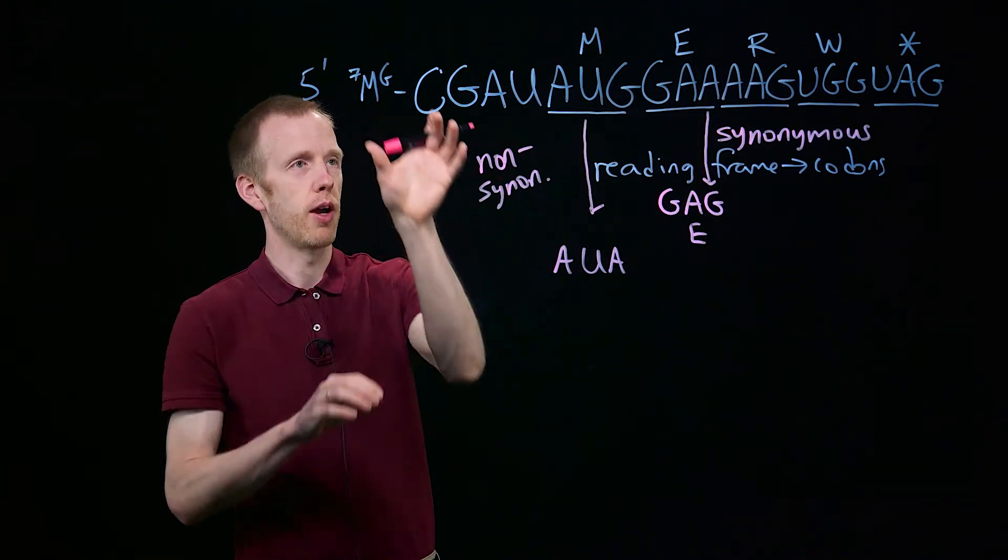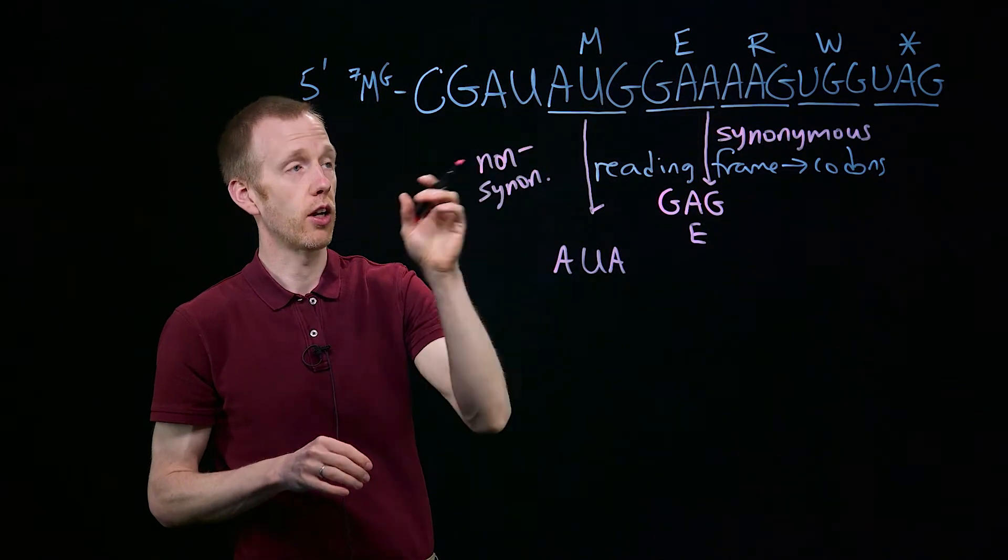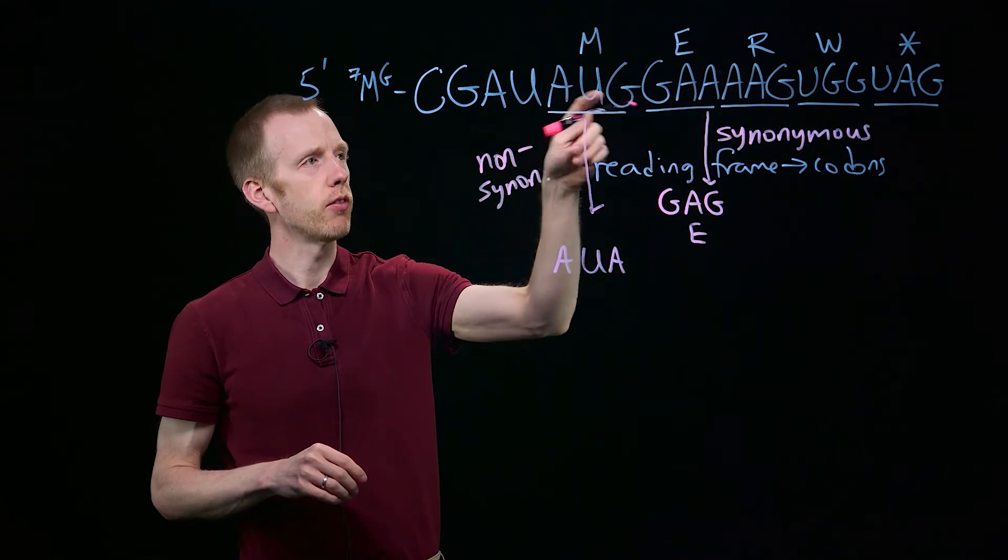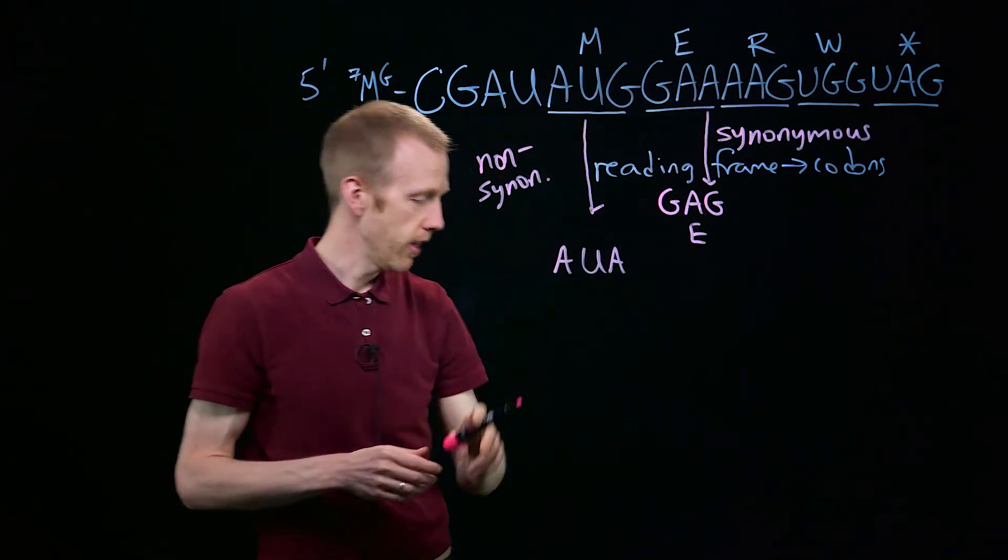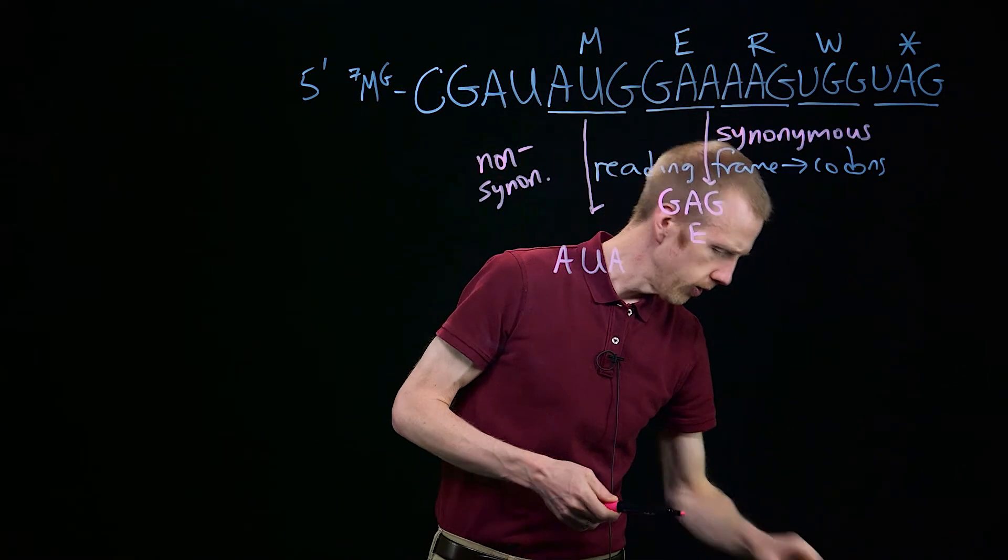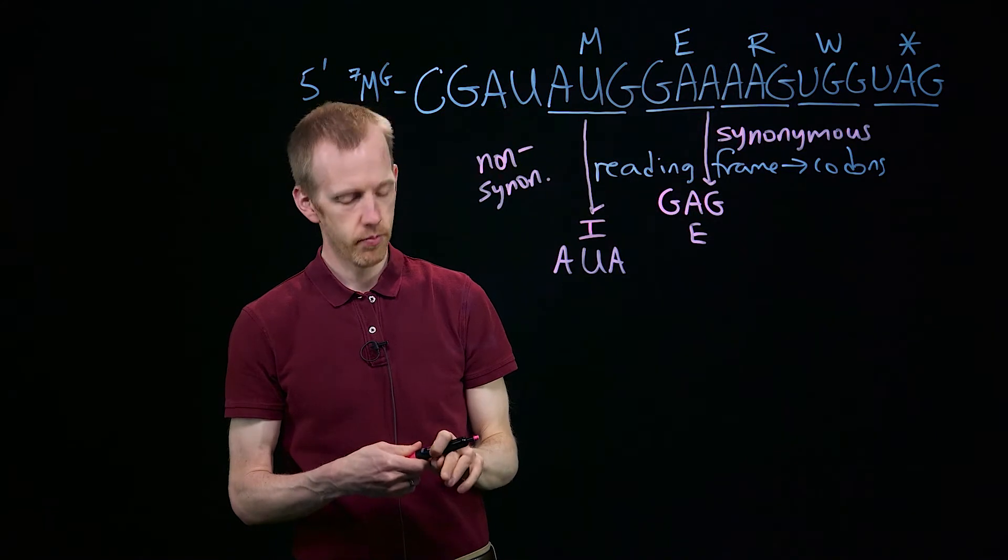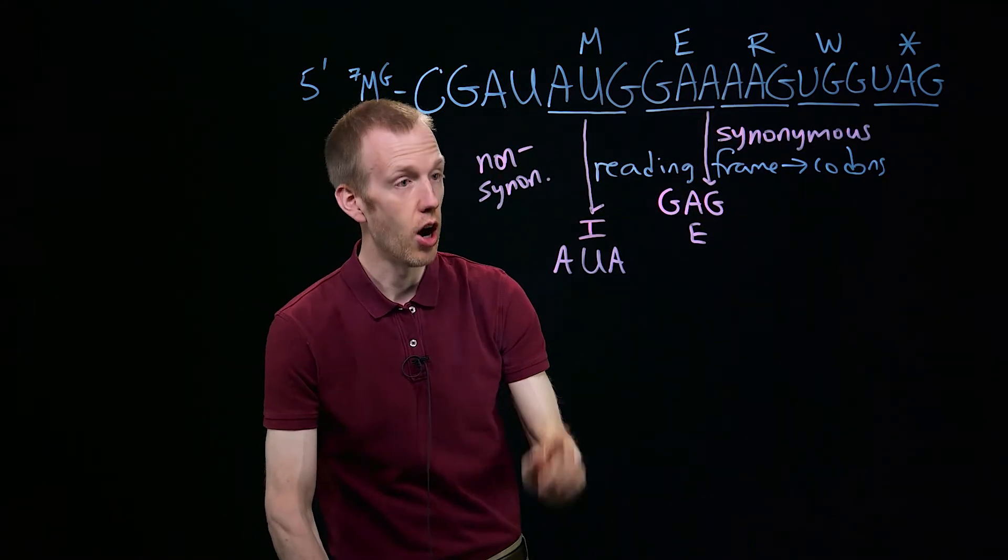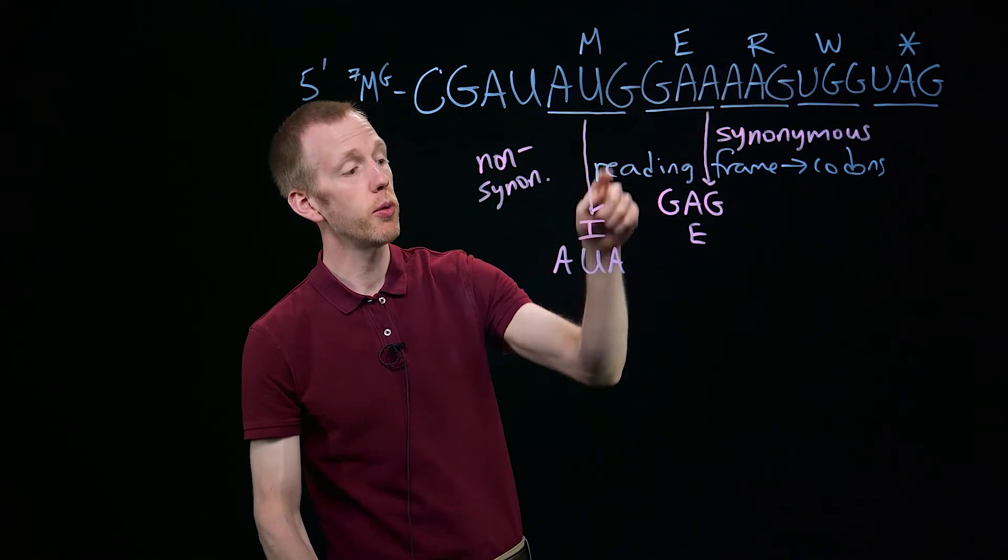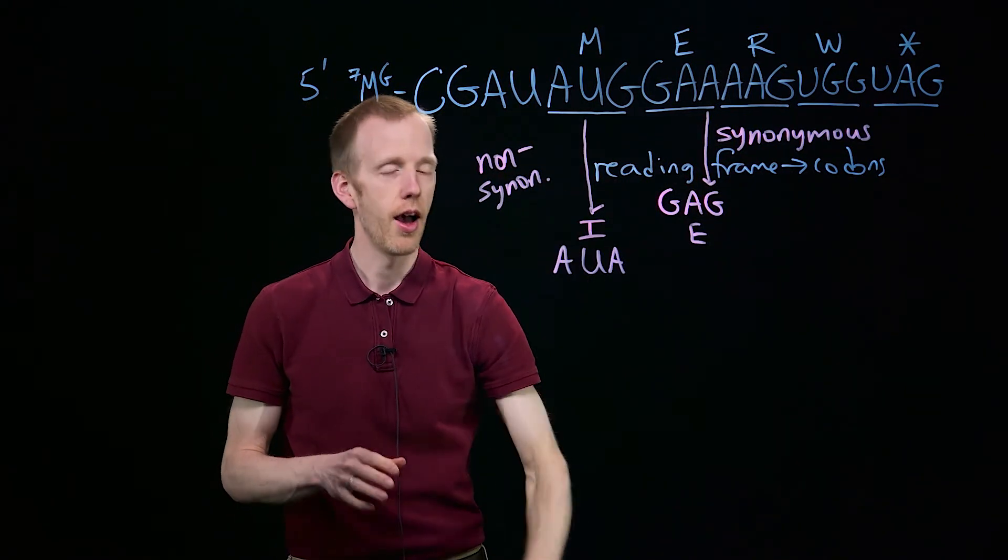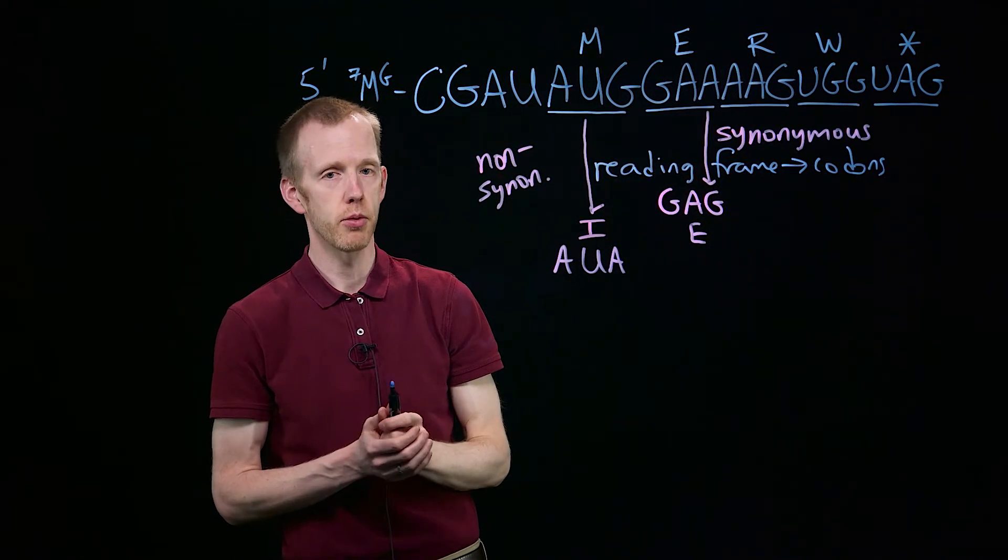But if there were, for example, if it was upstream and the ribosome was moving down and translating codons, when it encountered AUG, instead of encoding methionine, AUA encodes a different amino acid, isoleucine. So we have a non-synonymous mutation. It's a point mutation, a single nucleotide change, but it changes the amino acid that's encoded. And that's the definition of a non-synonymous mutation.